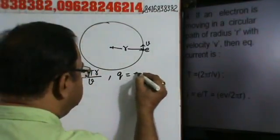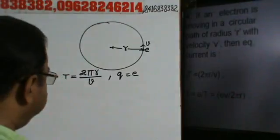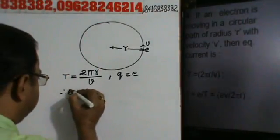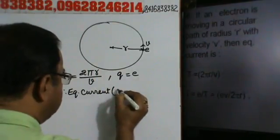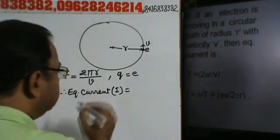And what for Q? This is nothing but an electron. Therefore equivalent current, I will be equal to Q by T.